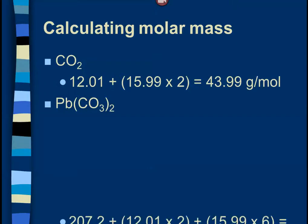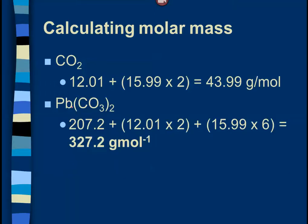Here is our second problem — lead carbonate, Pb(CO₃)₂. Lead on the periodic table is 207.2. The 2 is distributed through the parentheses, so there are two carbons (12.01 times 2) and six oxygens (15.99 times 6). We should get about 327.2 grams per mole. I rounded to one digit past the decimal because lead only has one digit past the decimal.